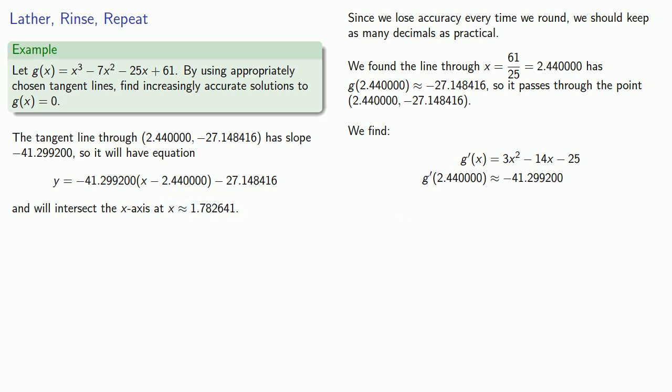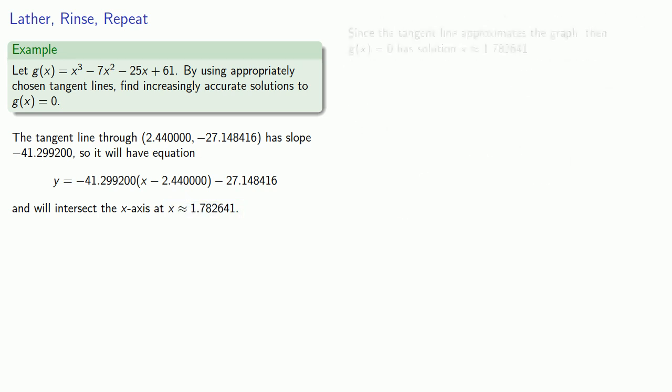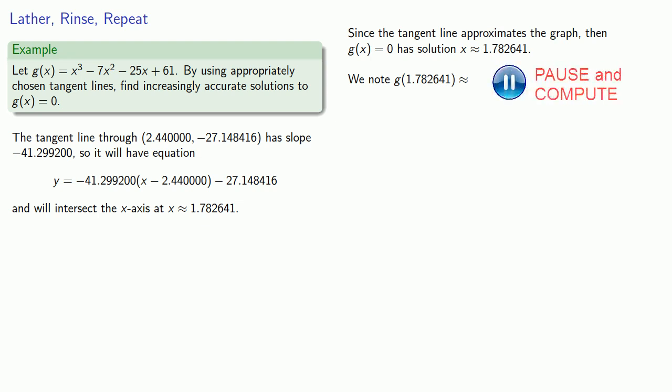How good a solution is this? If we evaluate our function at 1.782641, we find it's approximately equal to, keeping our six decimal places of accuracy. It's useful to remember that this is a point on the graph of y equals g(x), and so we can consider the tangent line through this point.